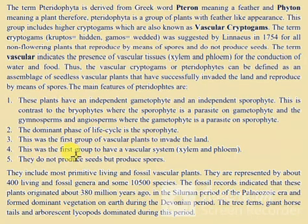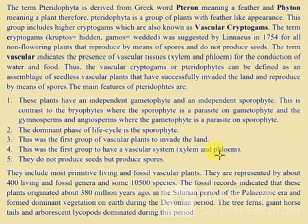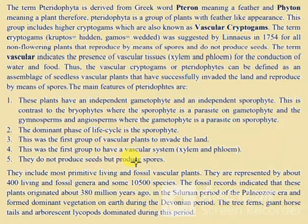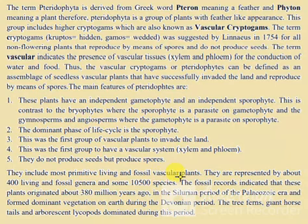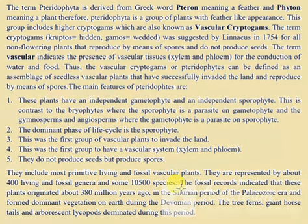Pteridophytes were the first group of vascular plants to invade the land, and the first group to have a vascular system of xylem and phloem. They do not produce seeds but produce spores, and they include the most primitive living and fossil vascular plants.